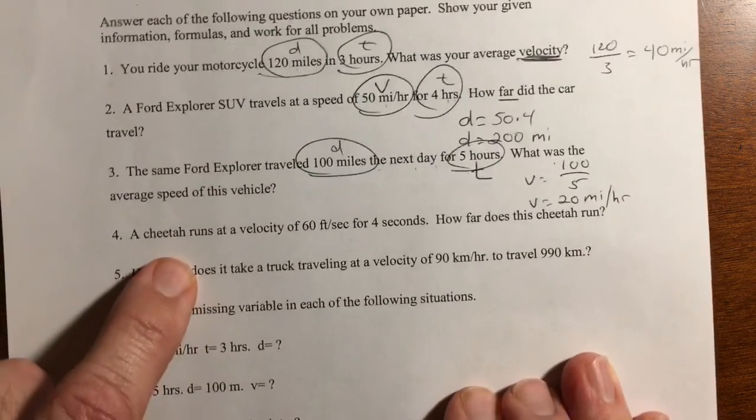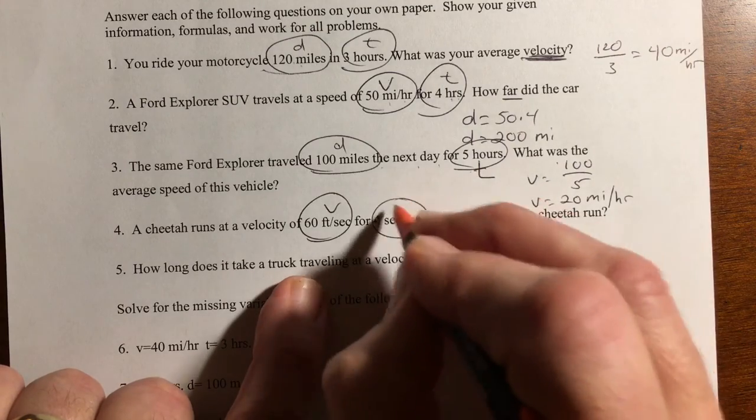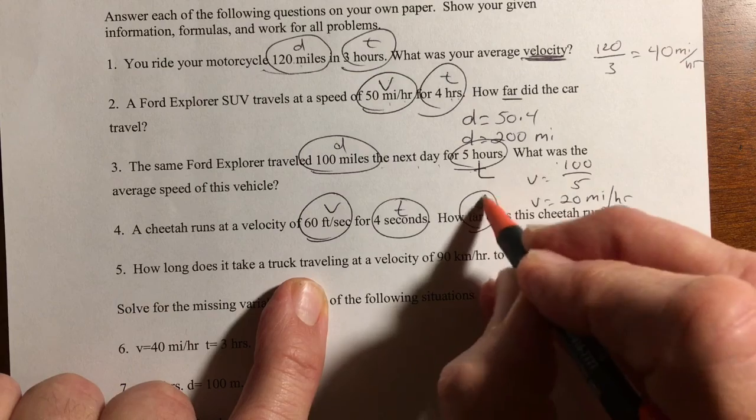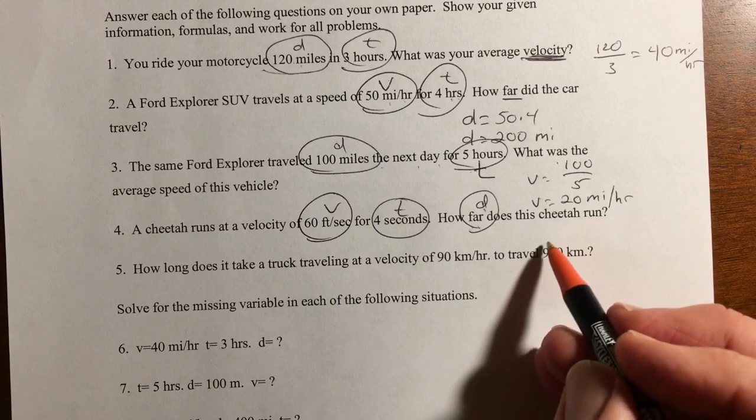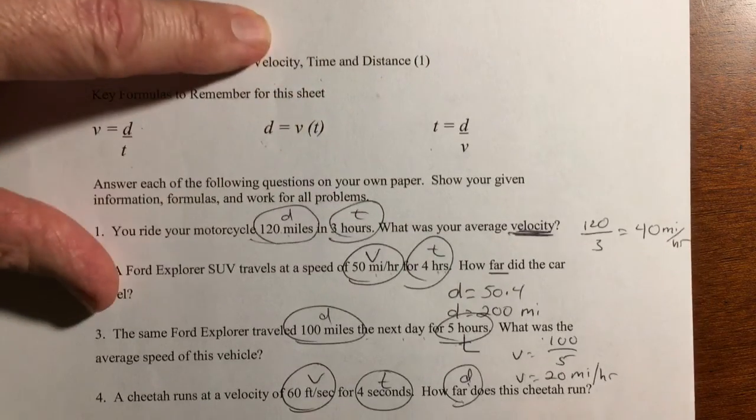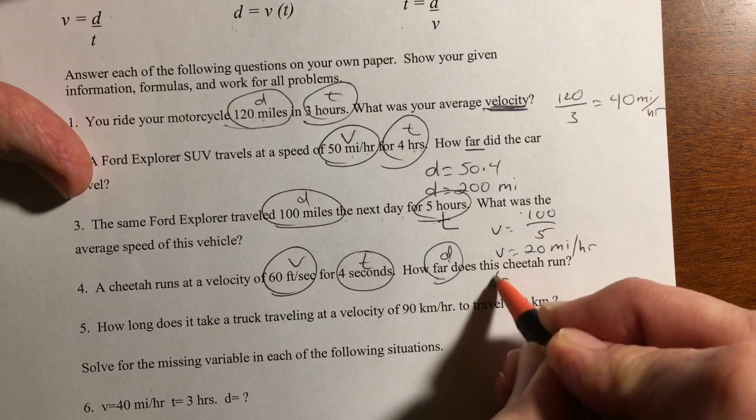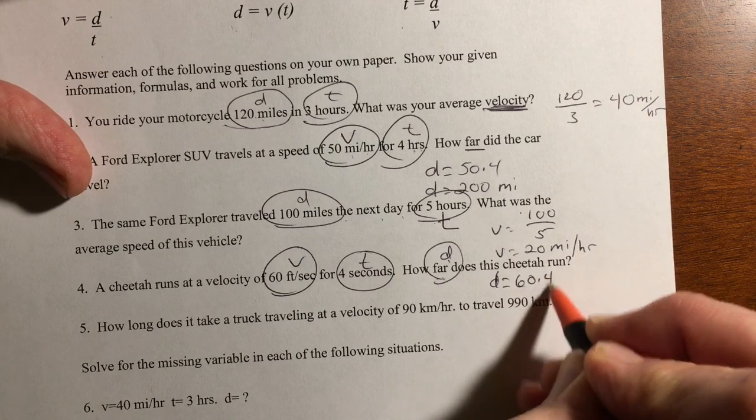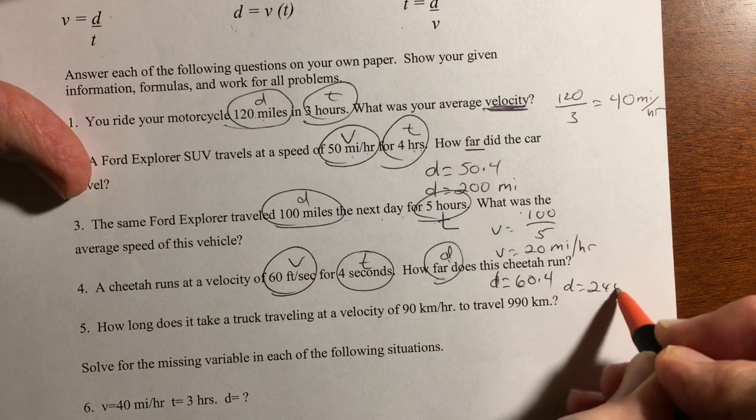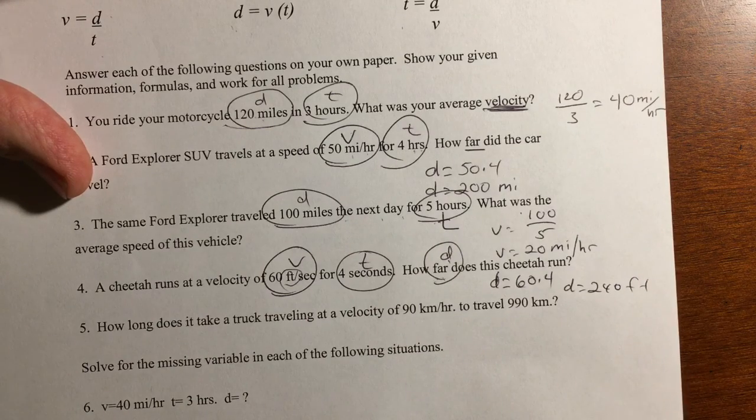Number four, a cheetah runs at a velocity of 60 feet per second. There's a V. Four seconds, that's time. How far, again, it's distance. I'm trying to find distance. Did this cheetah run. So it's going to be V times T. So D equals 60 times four, which D equals 240. Again, the distance is going to be in feet in those four seconds.